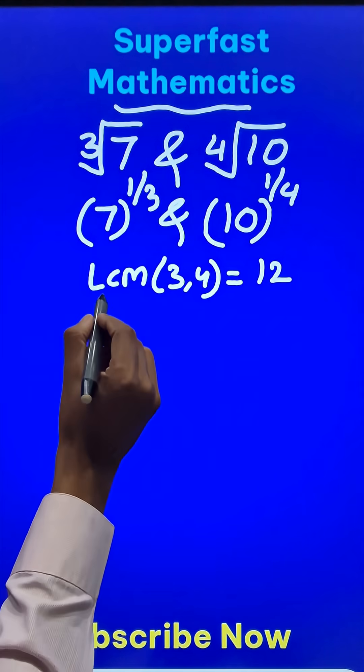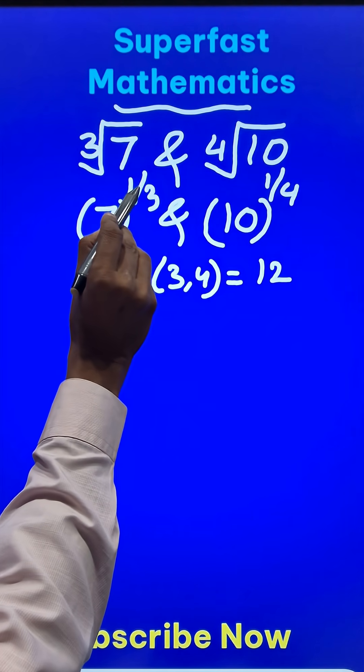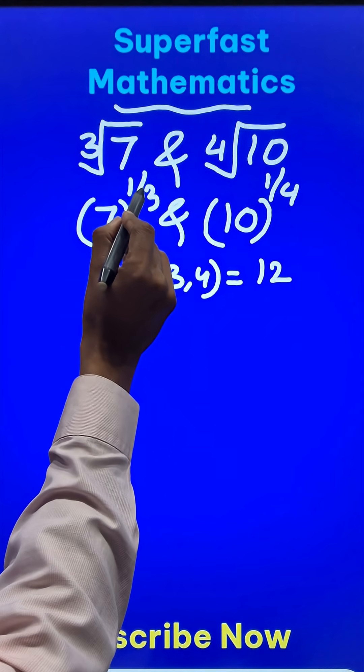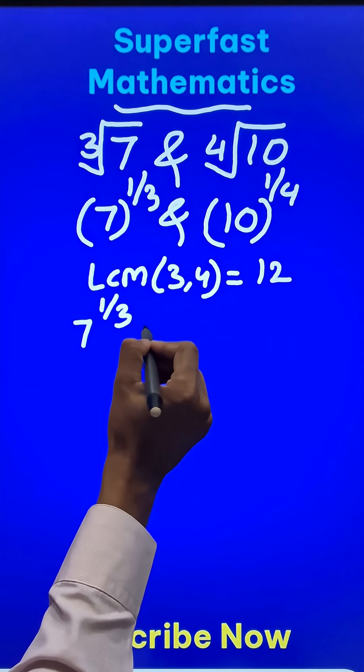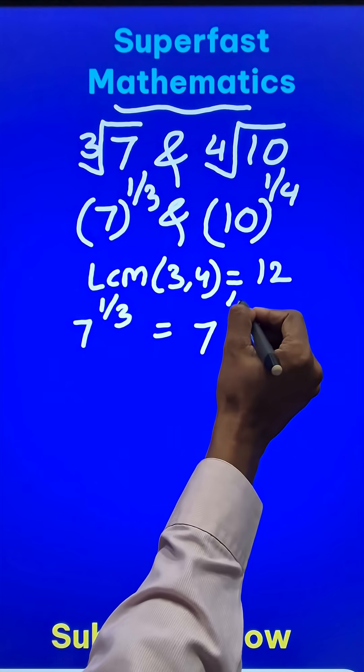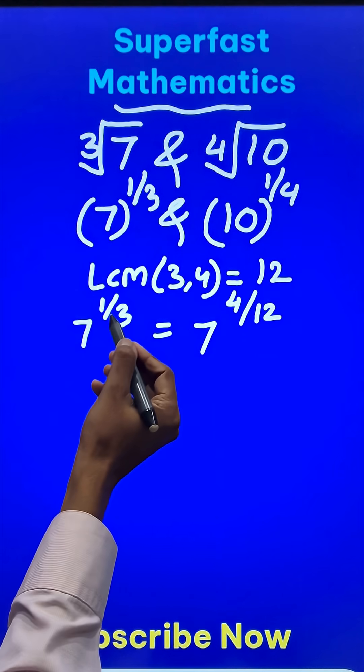What I'm going to do here is convert 1/3 into a new fraction having denominator 12. So 7^(1/3) will be written as 7^(4/12), since 4/12 equals 1/3.